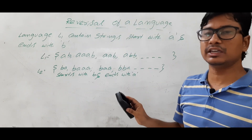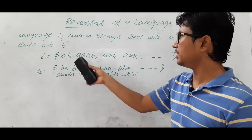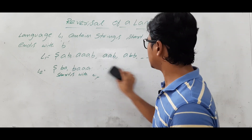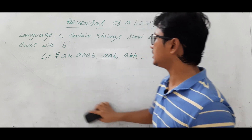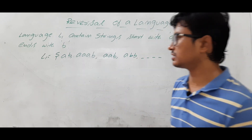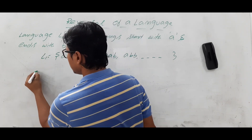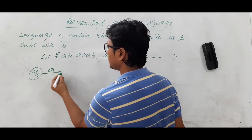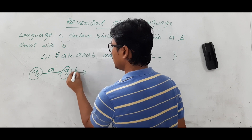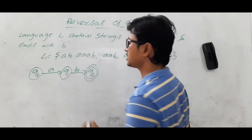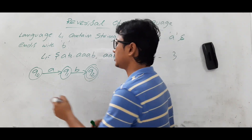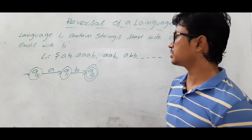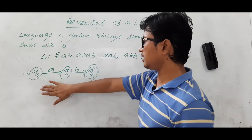Now we will construct a DFA over alphabet {A, B} for language L1, which starts with A and ends with B, and then we will go for the reversal. The smallest string in L1 is AB. From initial state Q0, on A we go to Q1, and on B we go to Q2, which is the final state.